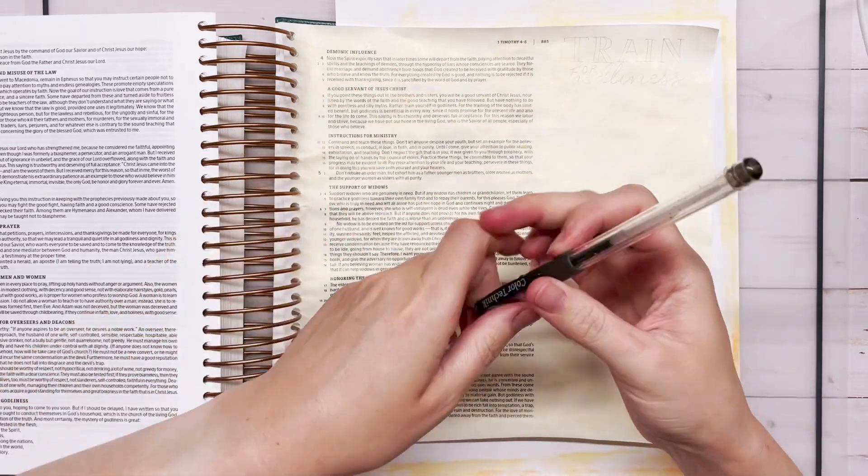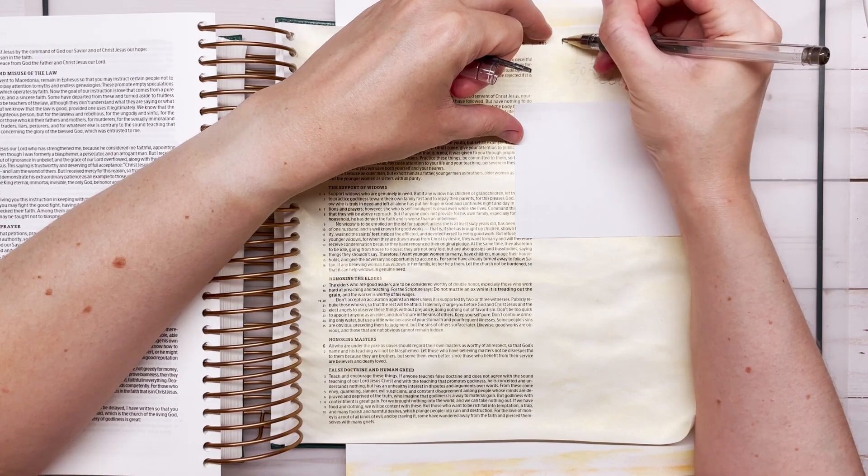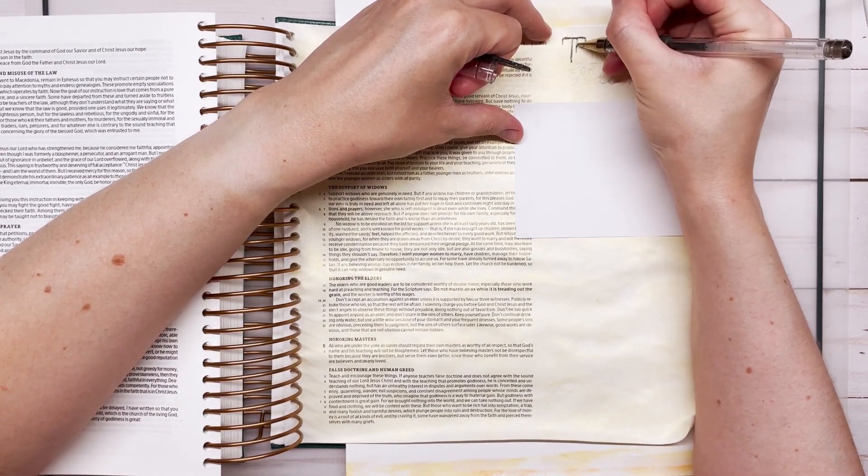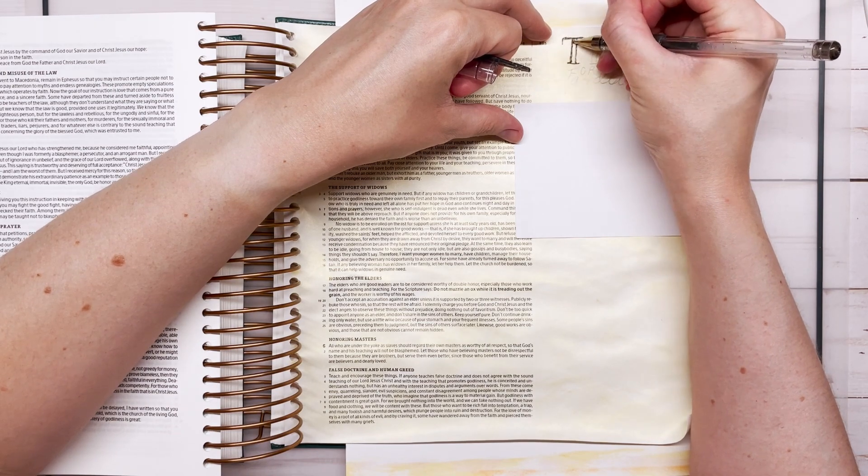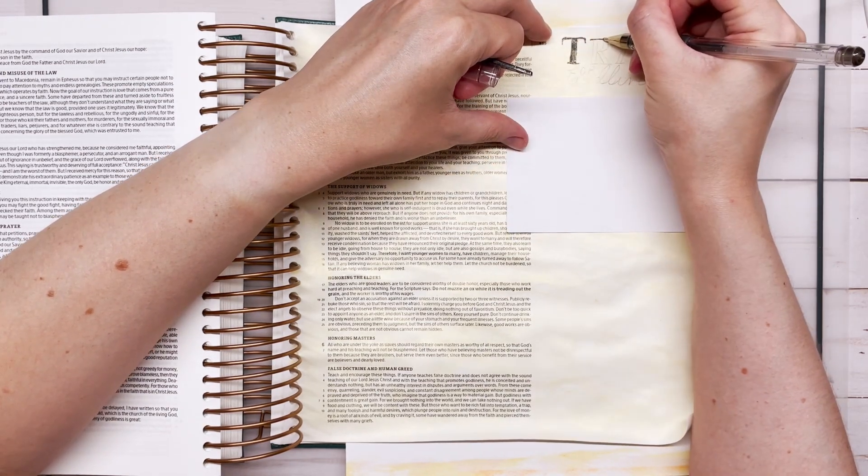So this is a Color Technique black glitter gel pen that I decided to use. Of course you can use any kind of pens or markers that you like for yours. But I'm just filling in all the letters with the black glitter gel pen.